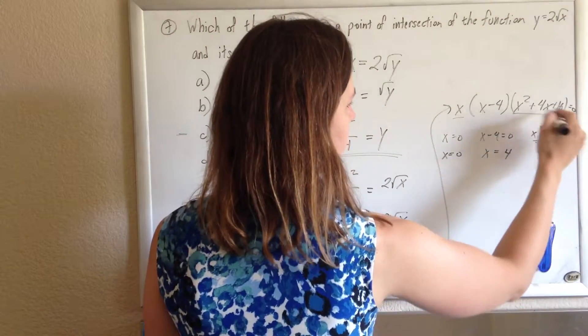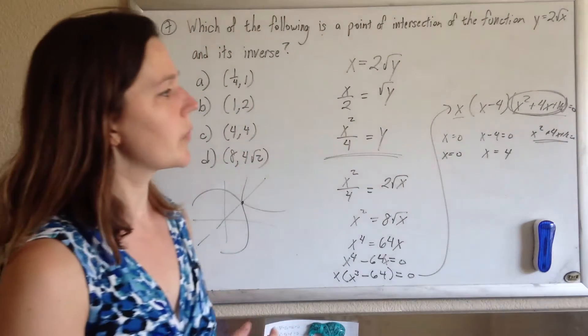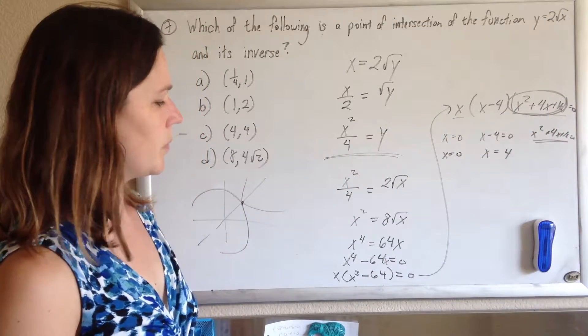This part here will never equal 0. This part here always has imaginary parts. Once you're done with that factoring of cubes, you can prove that this part will always have imaginary solutions.